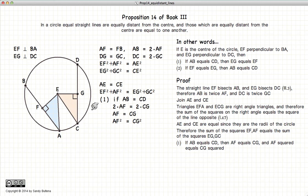So let's begin our proof of the first part of this proposition, which is that if AB is equal to CD. Well, AB is equal to twice AF, and CD is equal to twice CG. So in other words, AF will be equal to CG. Well, if AF is equal to CG, then AF squared is equal to CG squared.